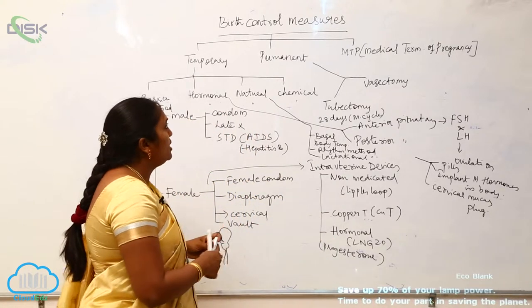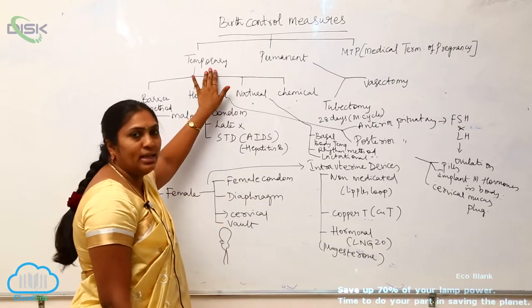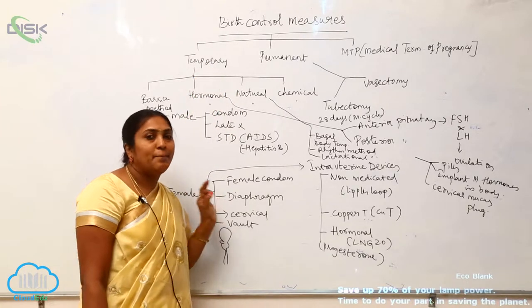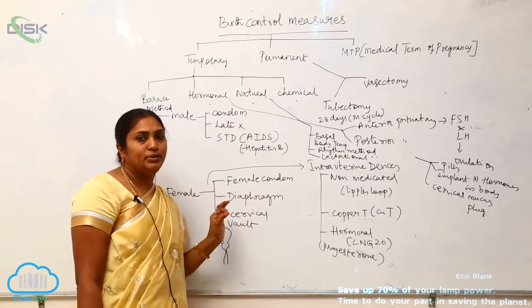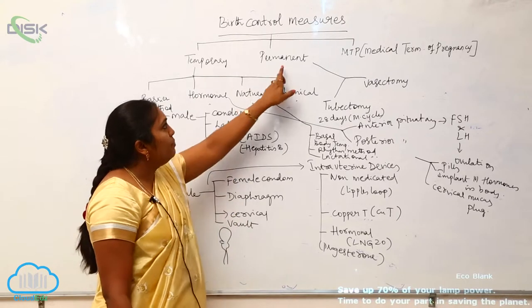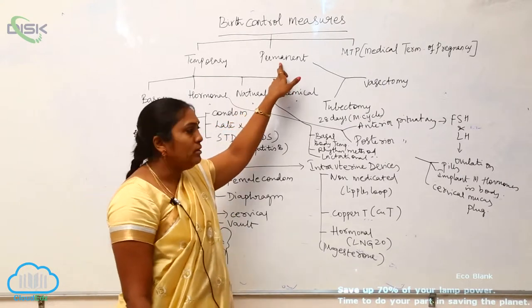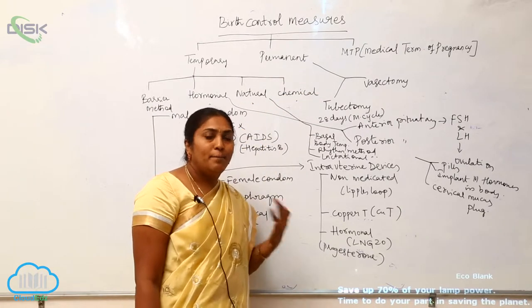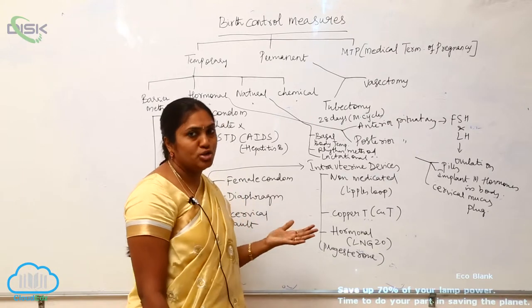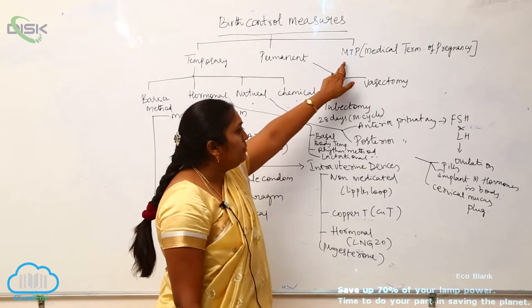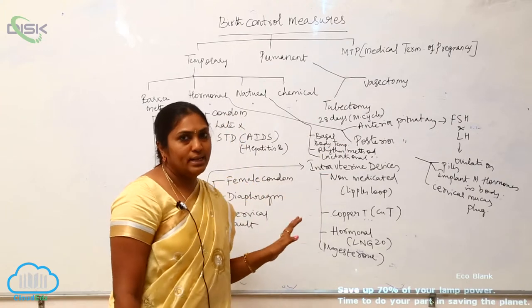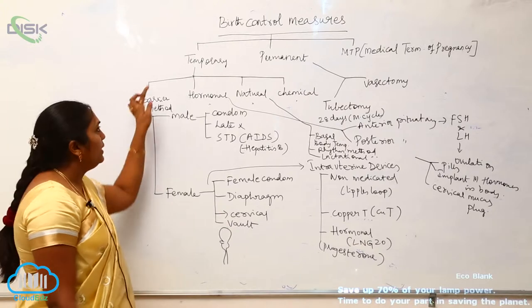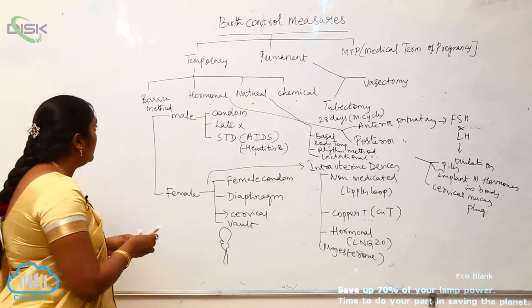The first important type is the temporary method. As the name suggests, it is temporarily applied to the female. The permanent method, also as the name suggests, permanently controls the birth of children. MTPs are medical termination of pregnancy. Now we will see the temporary method in detail.